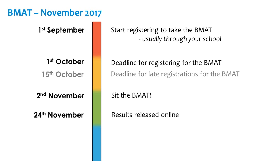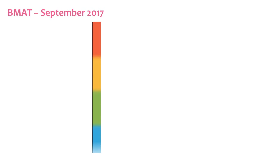You will have put the universities down in your registration form. You will also be able to check your results online, and details about how to do this will be given to you when you sit the test. If you'd like to query your results, the deadline for this is the 1st of December — check the BMAT website for more information. For the 2017 application cycle, a September sitting of the BMAT will be available to students applying to certain universities for courses starting in 2018. Not all universities will accept the September BMAT, so make sure you check the BMAT website.